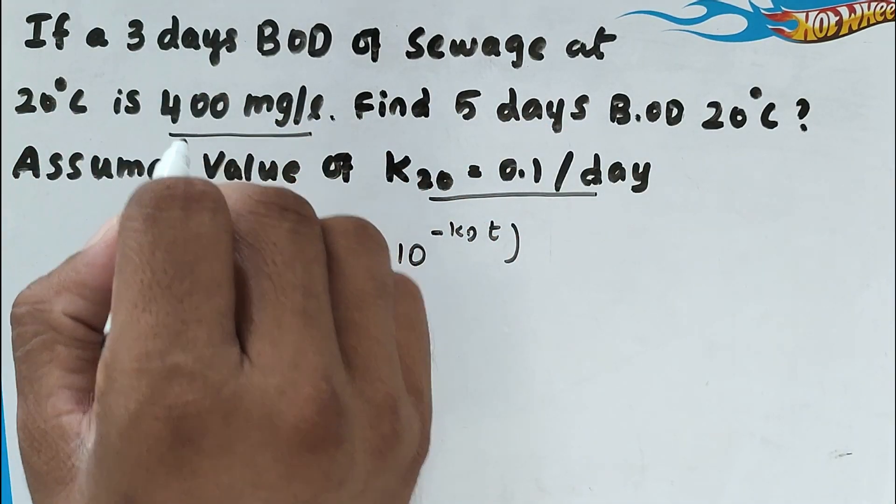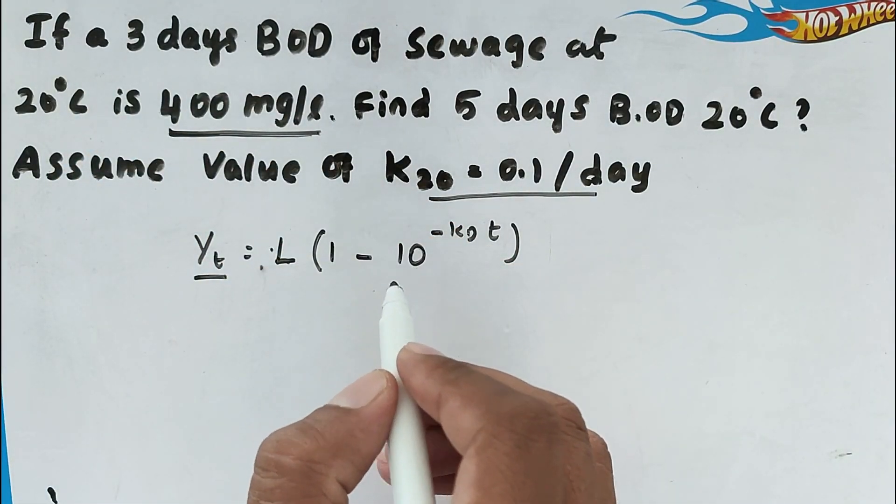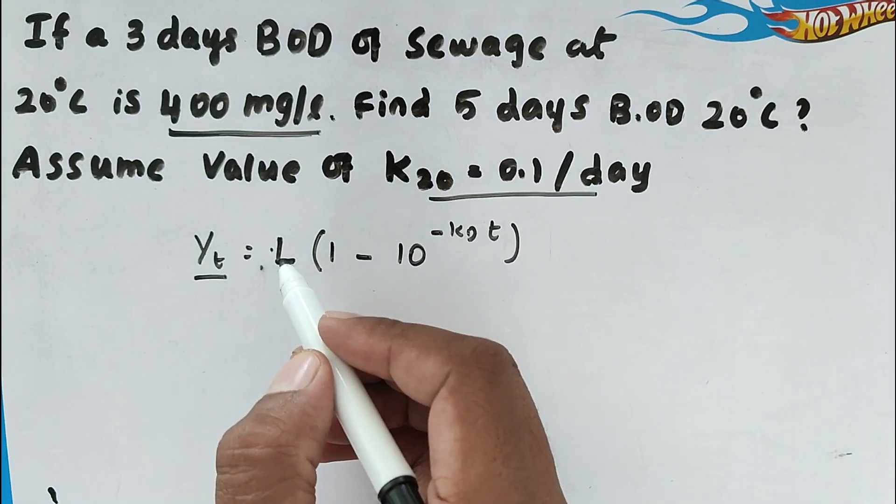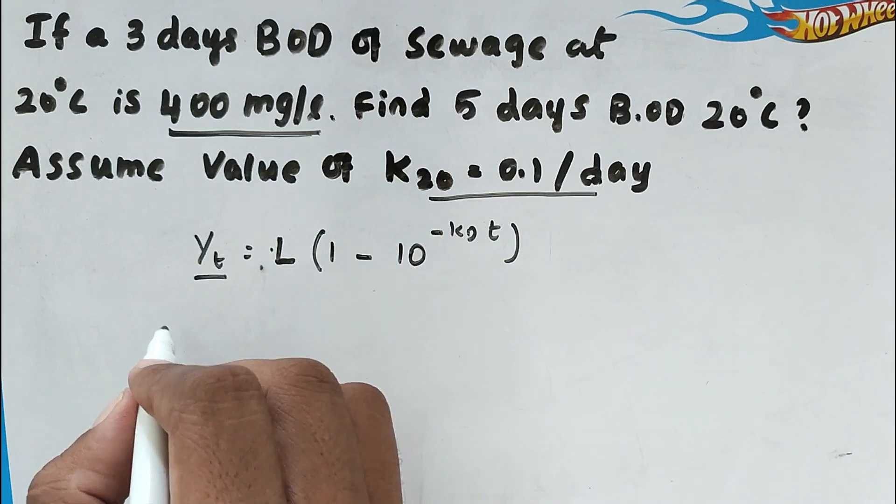So now they are given Yt value, that is 3 days BOD is given. So we have to find out the ultimate BOD L. After that we can find out the 5 days BOD. So now we can substitute the value.